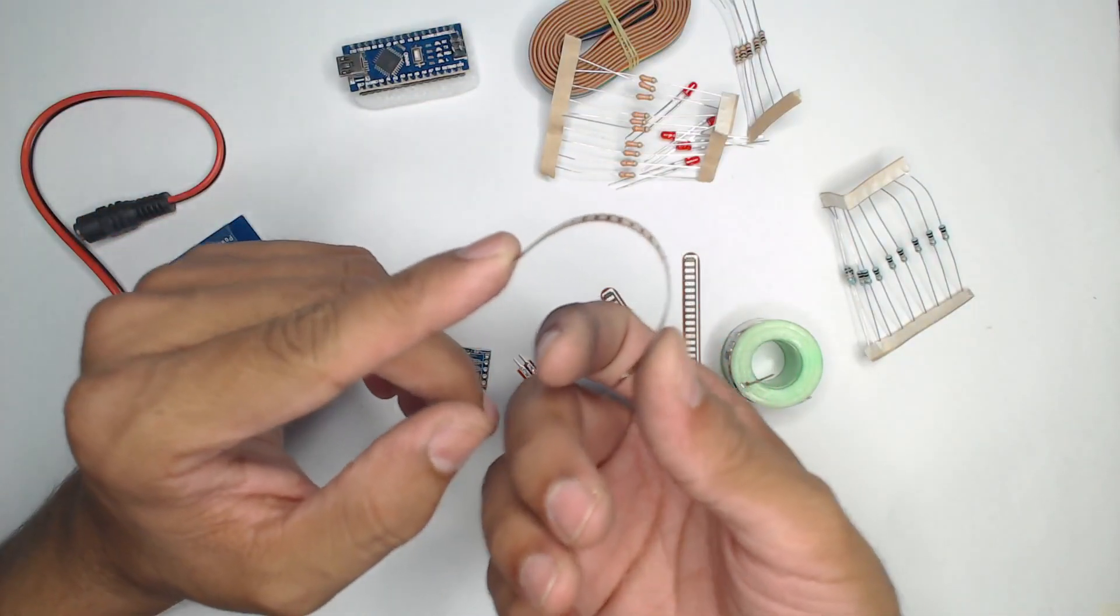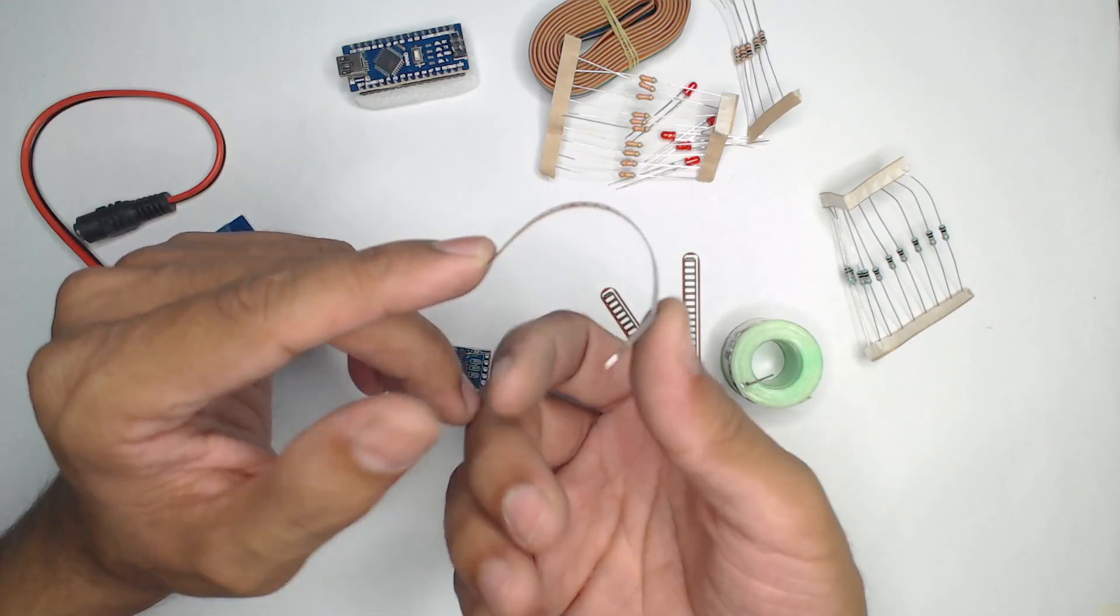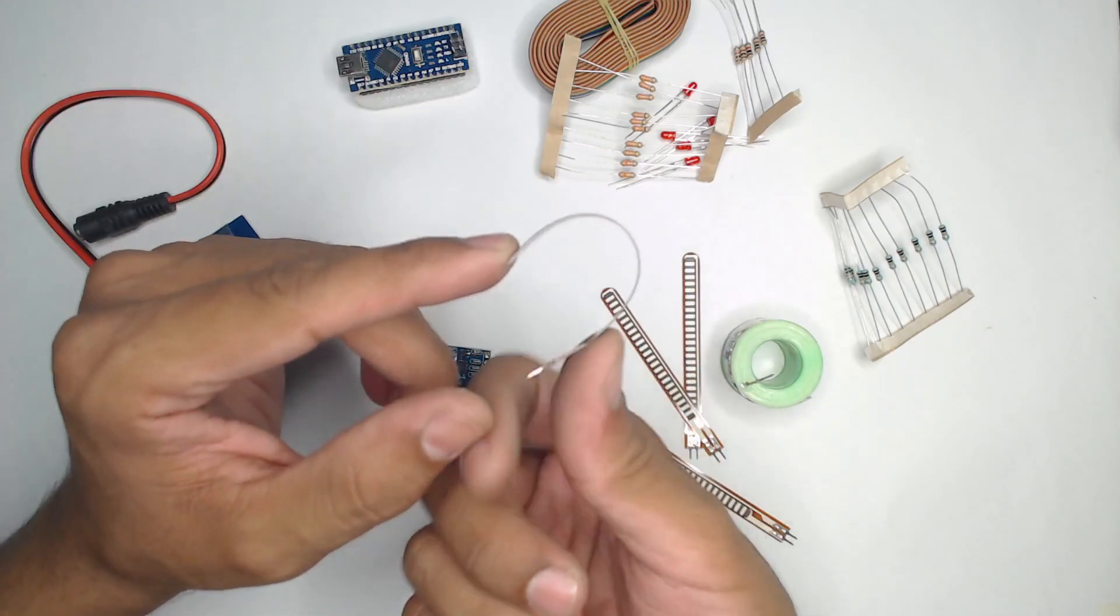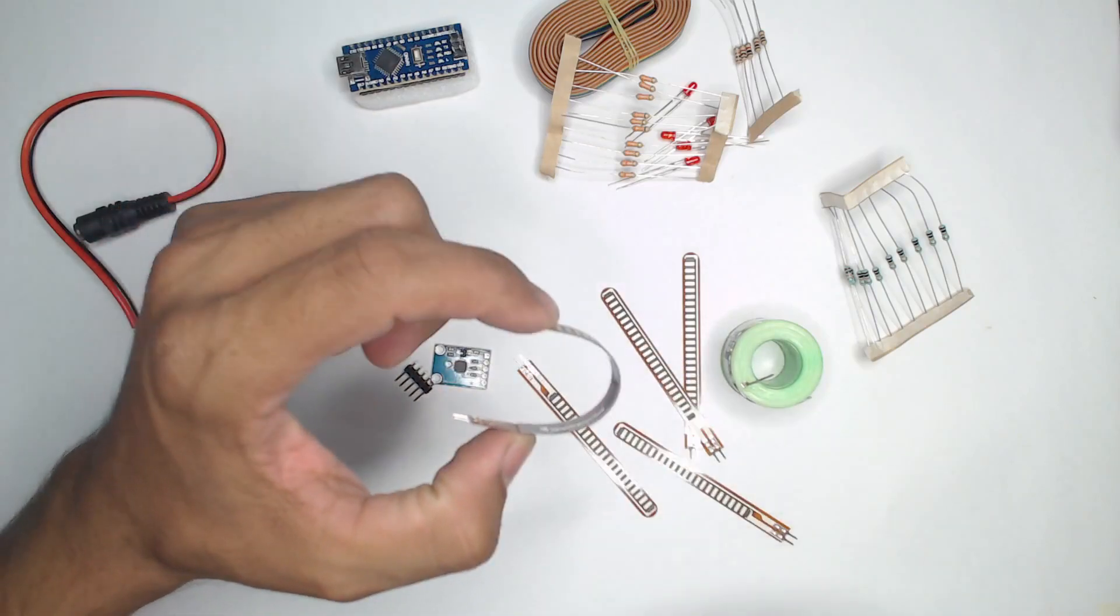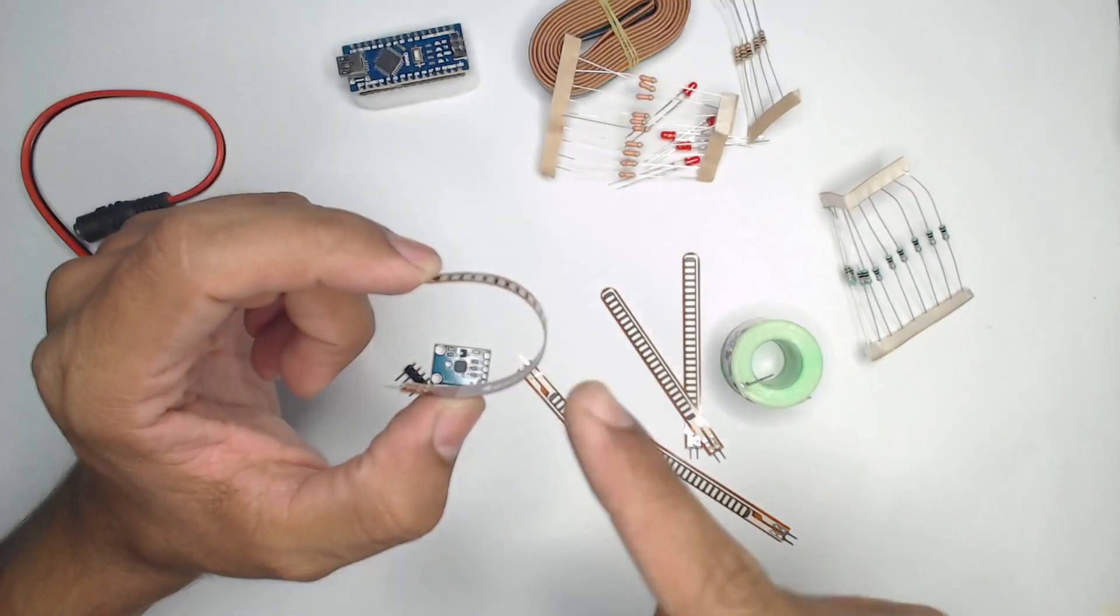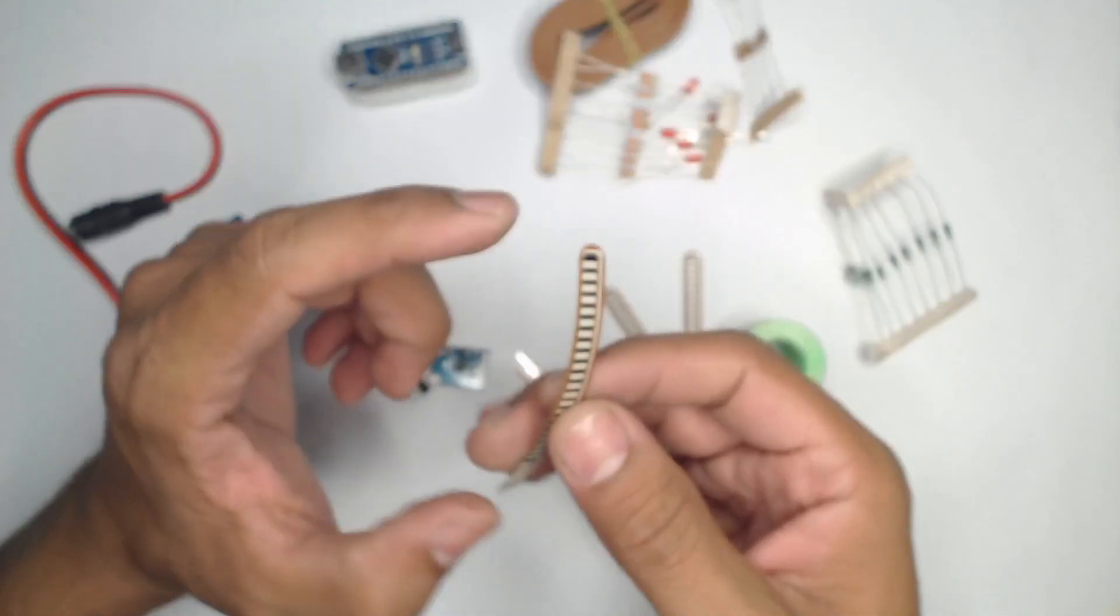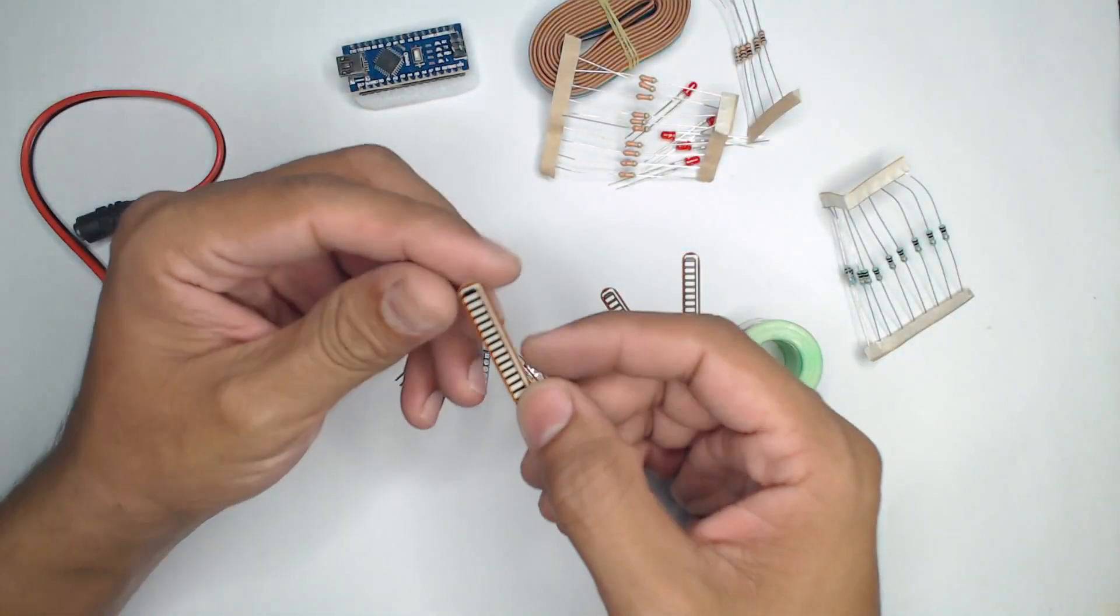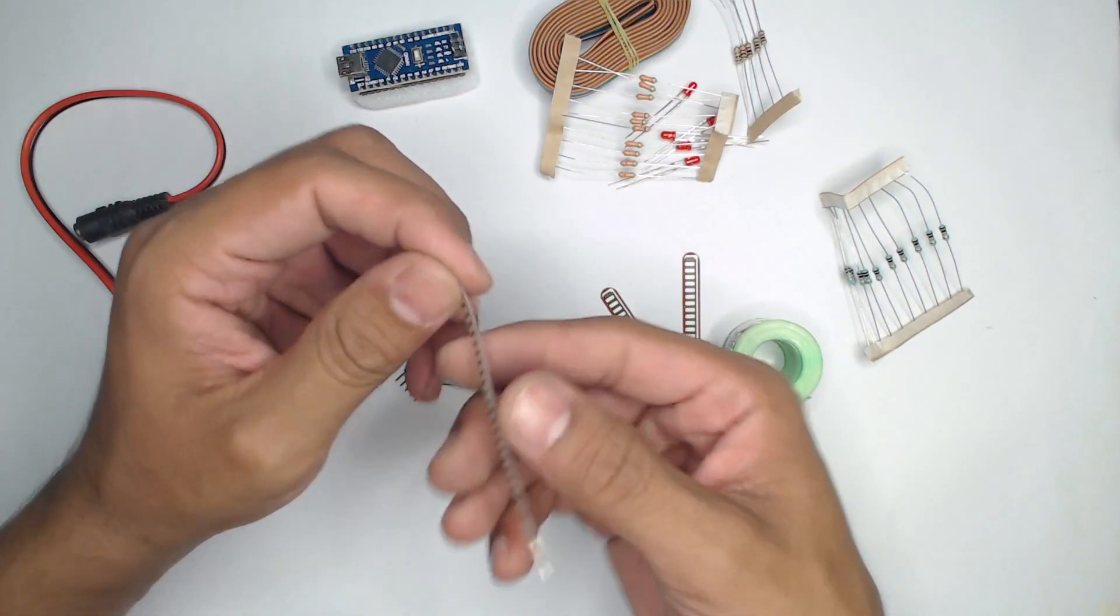When I bend it to near about a U shape or like a C, it reads about 19 kilo ohms.